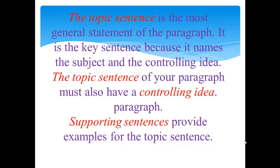Supporting sentences provide examples for the topic sentence. If a writer claims, for instance, that early childhood education programs provide cognitive benefits well beyond preschool, the second, third, and fourth sentences will include information supporting the main idea in the topic sentence. The topic sentence states the main idea and not only names the topic of the paragraph, but also limits the topic to the specific area that can be discussed completely in the space of a single paragraph. The part of the topic sentence that announces the specific area to be discussed is called the controlling idea.